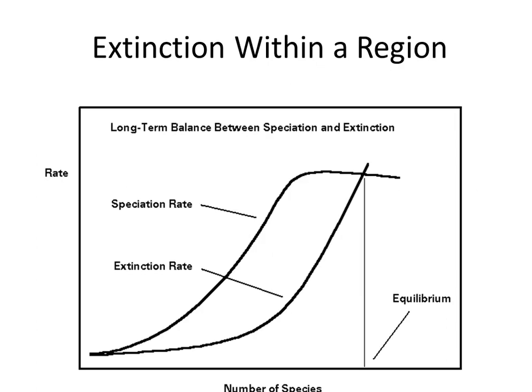Here is the same chart that you saw before showing extinction within a region, and it shows you the balance between speciation and extinction at equilibrium.